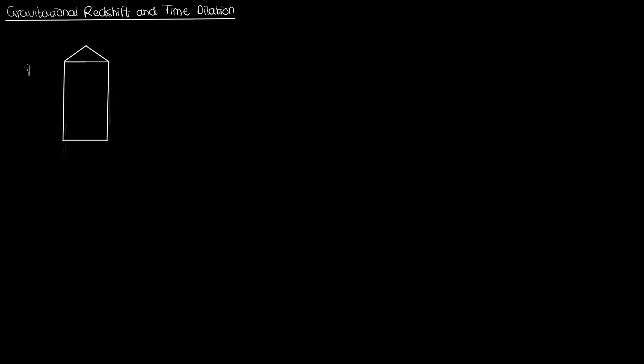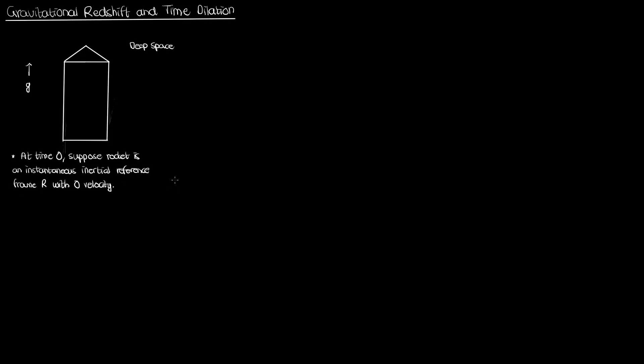We'll begin by imagining a rocket ship in deep space, far away from any masses or energy that would give rise to gravity or space-time curvature. Suppose this rocket ship is accelerating upwards at a constant acceleration g. We'll assume that at time zero the rocket represents an instantaneous inertial reference frame R, so its velocity at time zero is zero relative to R. This rocket ship has a source at the bottom which fires an electromagnetic wave at an angular frequency omega naught relative to R.